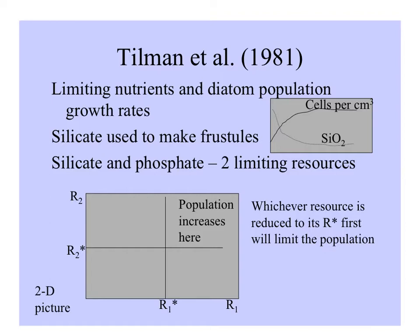In the bottom picture, a diagram shows increasing levels of two different resources, with their critical levels marked with a star. Only when critical levels of both are reached can the populations grow. But whichever resource is reduced to its critical level — R-star — first is the one that will limit the population.